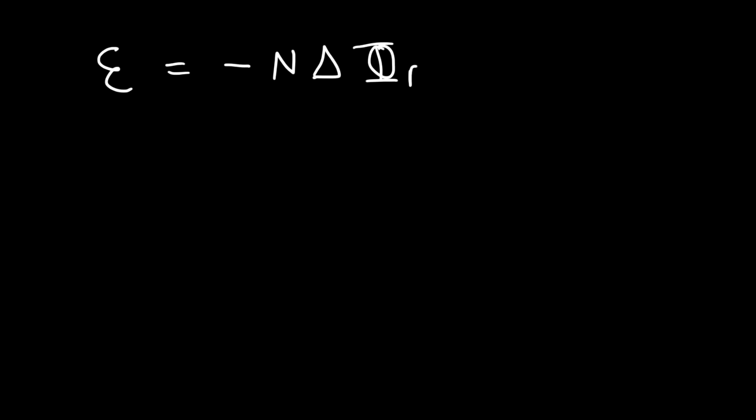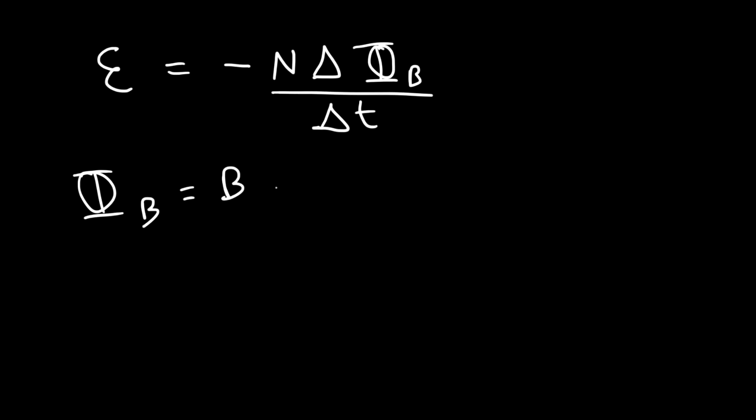The equation associated with Faraday's law is: the induced EMF equals negative N times the change in flux divided by the change in time. The faster the magnetic flux changes, the greater the induced EMF in the second coil. A change in magnetic field leads to a change in magnetic flux, which gives rise to an induced EMF. The magnetic flux equals the magnetic field times the area times cosine theta, where theta is the angle between the normal line perpendicular to the face of the coil and the magnetic field.